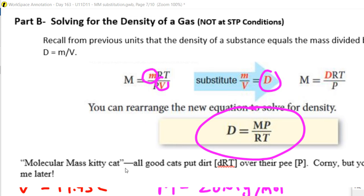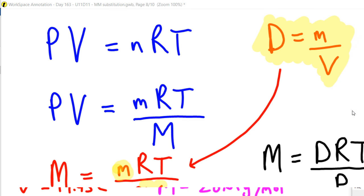And then there's a saying to help you remember this formula up here. Sometimes, you know, if your teacher is making you memorize a formula, it can be hard to remember everything. And here's a saying to remember this formula. So the molar mass kitty cat, all good cats put dirt over their pee. So DRT, dirt over pee. So the molar mass kitty cat puts dirt over its pee.